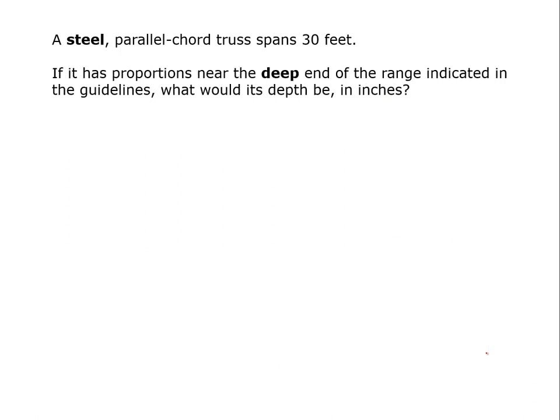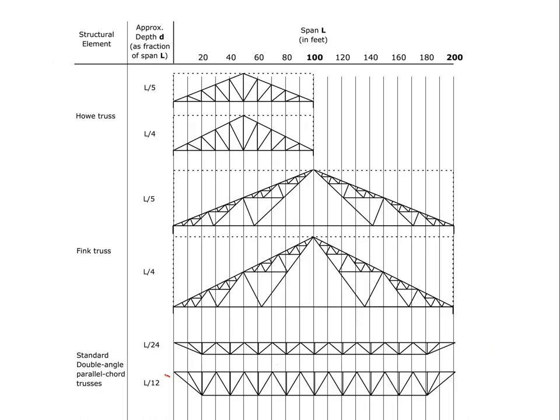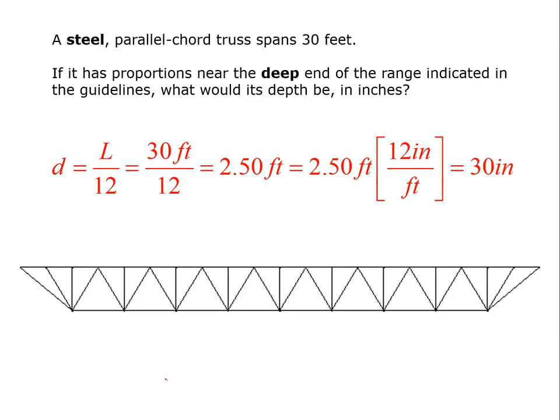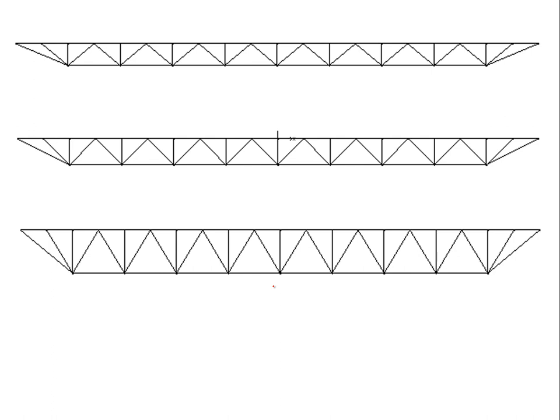Okay. Well, relative to parallel cord trusses, just to finish this discussion off, we'll look at the deep end of the range. So we come here and we see that it's L over 12. And when we run those numbers, we say the depth is equal to L over 12, which is 30 over 12, which is 2.5 feet, which is 30 inches. And this structure right here is drawn to those proportions. So in summary, the one on the top is the shallow end for trusses. The one on the bottom is the deep end.